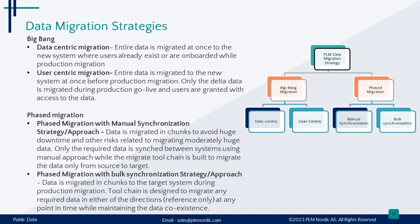Phased migration with manual synchronization is a strategy where data is migrated in chunks to avoid huge downtime and other risks related to migrating moderately large data. Only the required data is synced between systems using a manual approach while the migration tool chain is built to migrate only from source to target. Phased migration with bulk synchronization is the most complicated and sophisticated strategy, used for huge data migration. In this approach, the tool chain is designed to migrate any required data in either direction at any point in time while maintaining data coexistence.